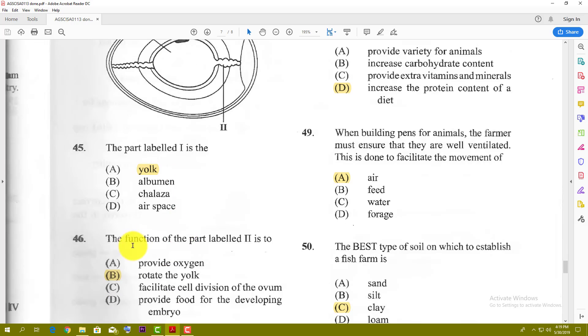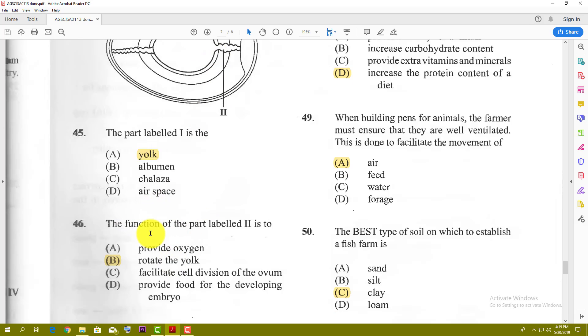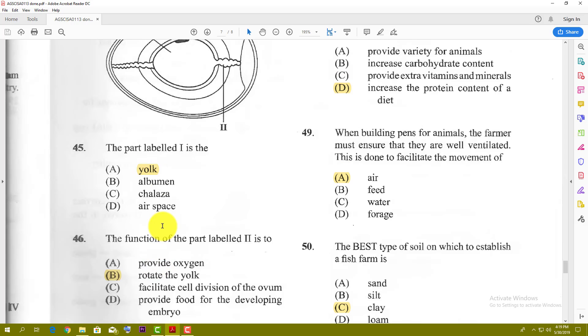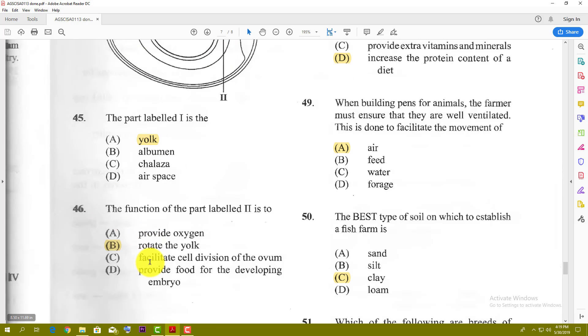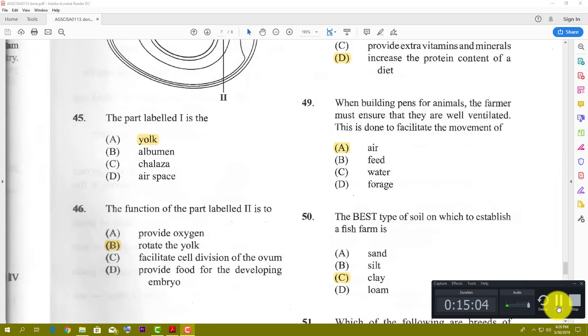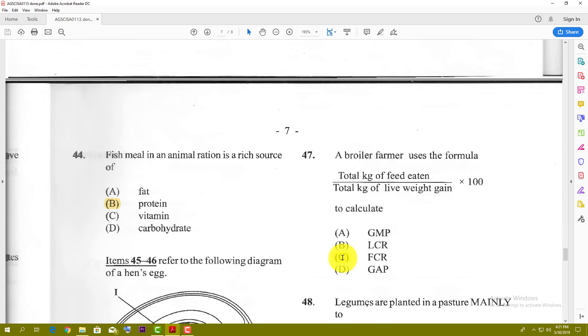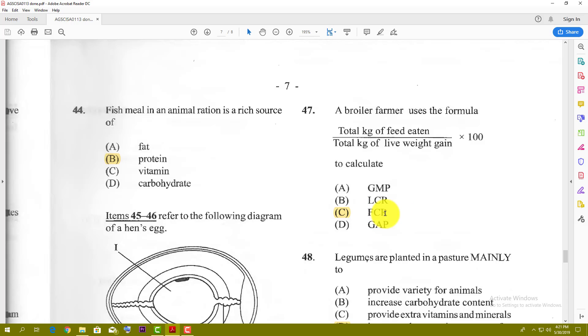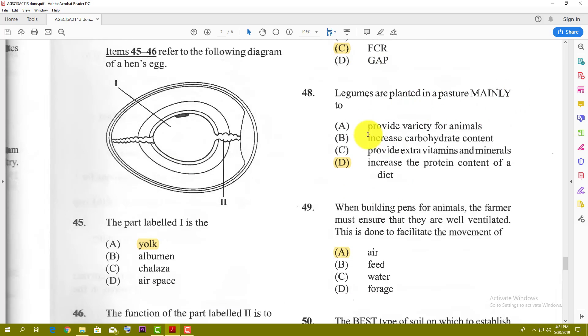Number forty-five and forty-six refer to the egg. The part labeled I is the yolk, of course. The function of the part labeled II, which is the chalaza—this is a weird question because the function of the chalaza is normally to hold the yolk in place. These two string-like structures hold the yolk in place, but here they are saying provide oxygen, rotate the yolk, facilitate cell division, or provide food for the developing embryo. So the best answer is B, rotate the yolk, even though the main job is to keep the yolk steady. Number forty-seven: a broiler farm uses the formula total kilogram of feed eaten divided by total live weight gained times 100. This is calculating the FCR, or the food conversion ratio. Number forty-eight: legumes are planted in a pasture mainly to increase protein content of diet because legumes give protein.